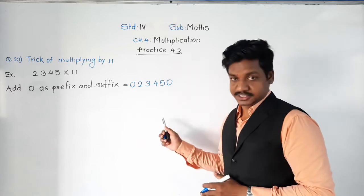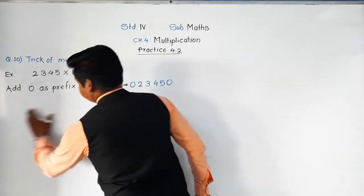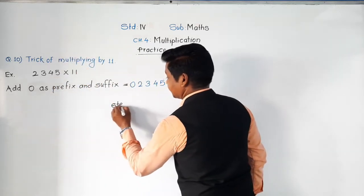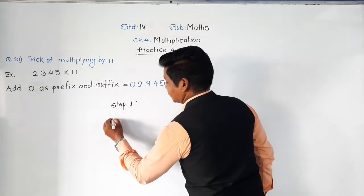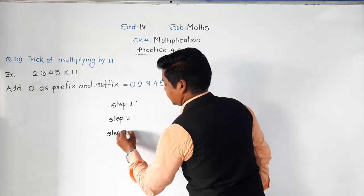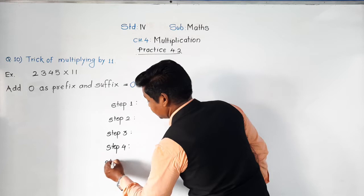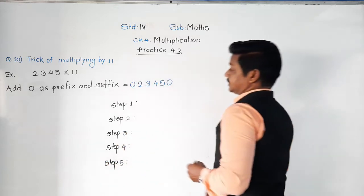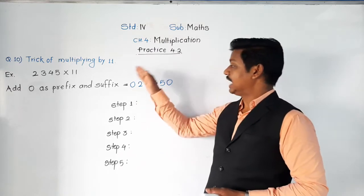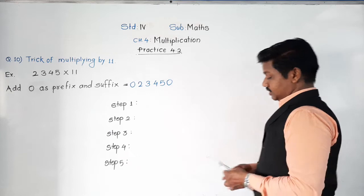After adding zeros, step 1 is going to start. Pay attention here. The original four-digit number, when we added 0 at the starting and at the end, has become a six-digit number. Now write this number as it is below.